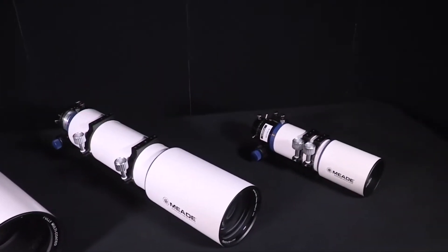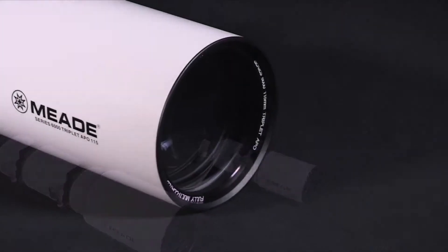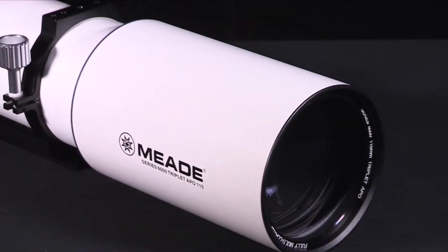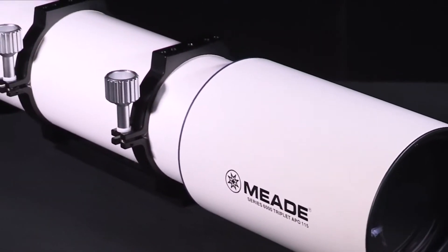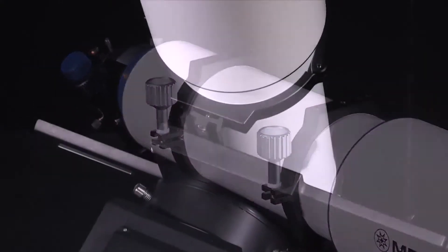The Series 6000 triplet APOs are some of the best crafted refractors on the market. Each of these refractors are individually constructed and tested to ensure that they meet our highest standards, both optically and mechanically.